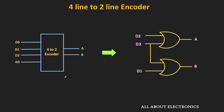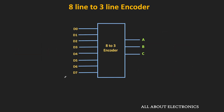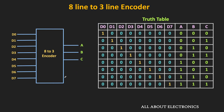Now let us look at the 8-line to 3-line encoder. This encoder has 8 inputs and 3 outputs, and depending on which particular input is high, we get a specific 3-bit code at the output. Here is its truth table: when D0 is high, the output code is 0 0 0; when D5 is high, the output code is 1 0 1; and when D7 is high, the output code is 1 1 1. In this way, we get a specific output code corresponding to each individual input.